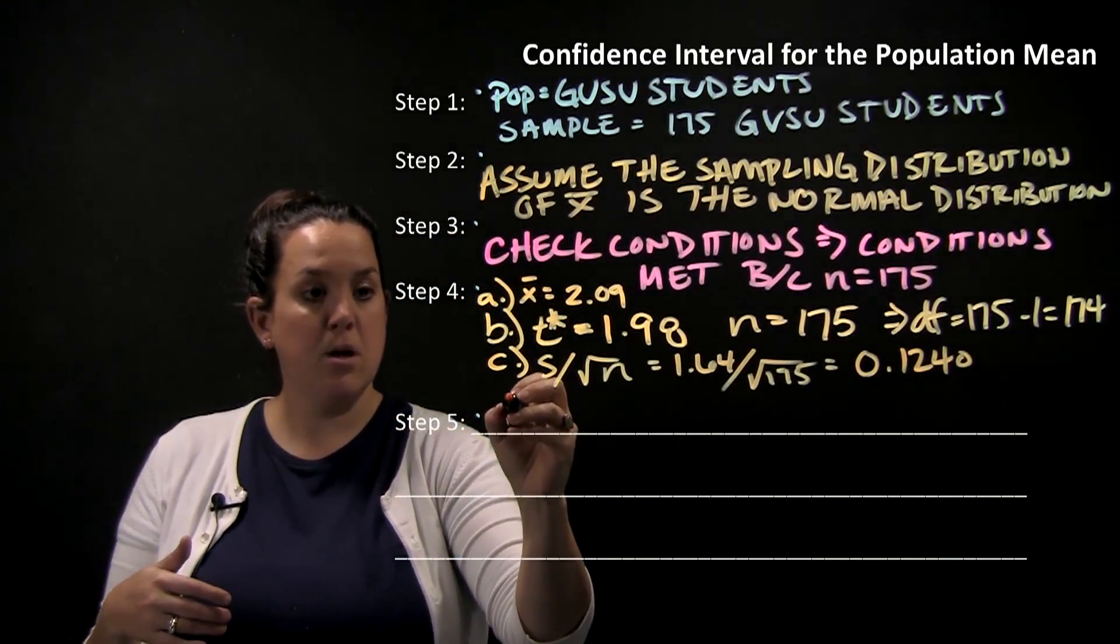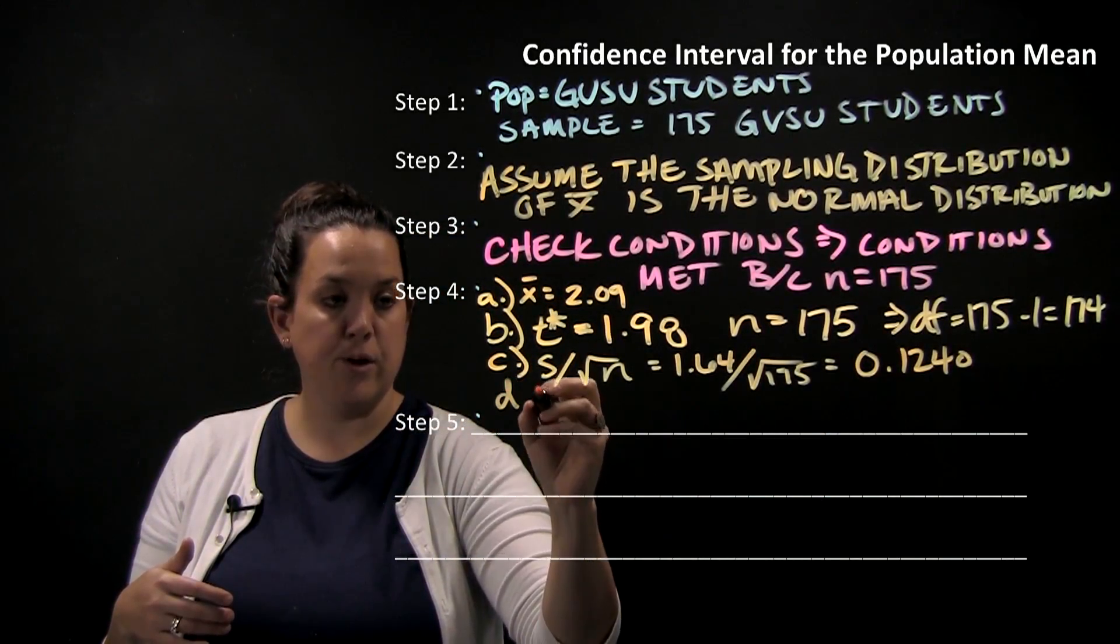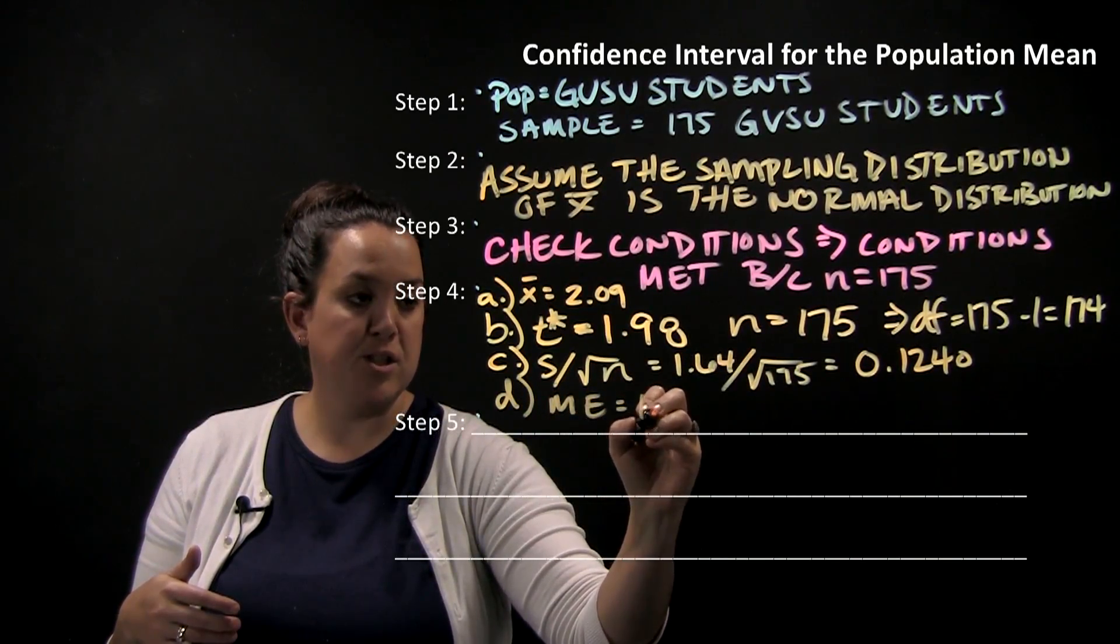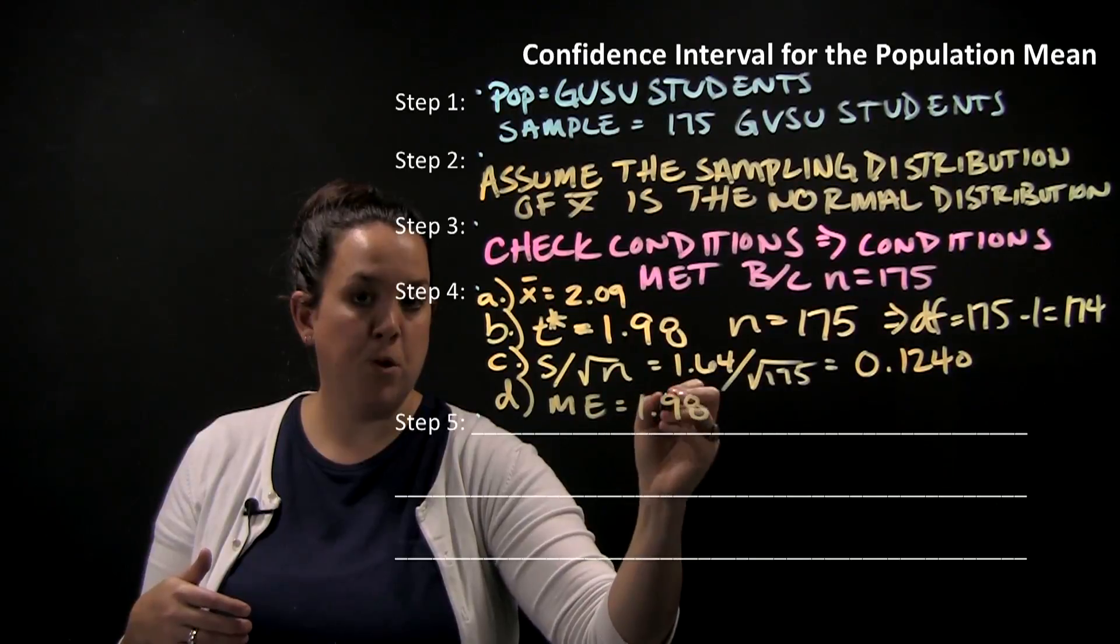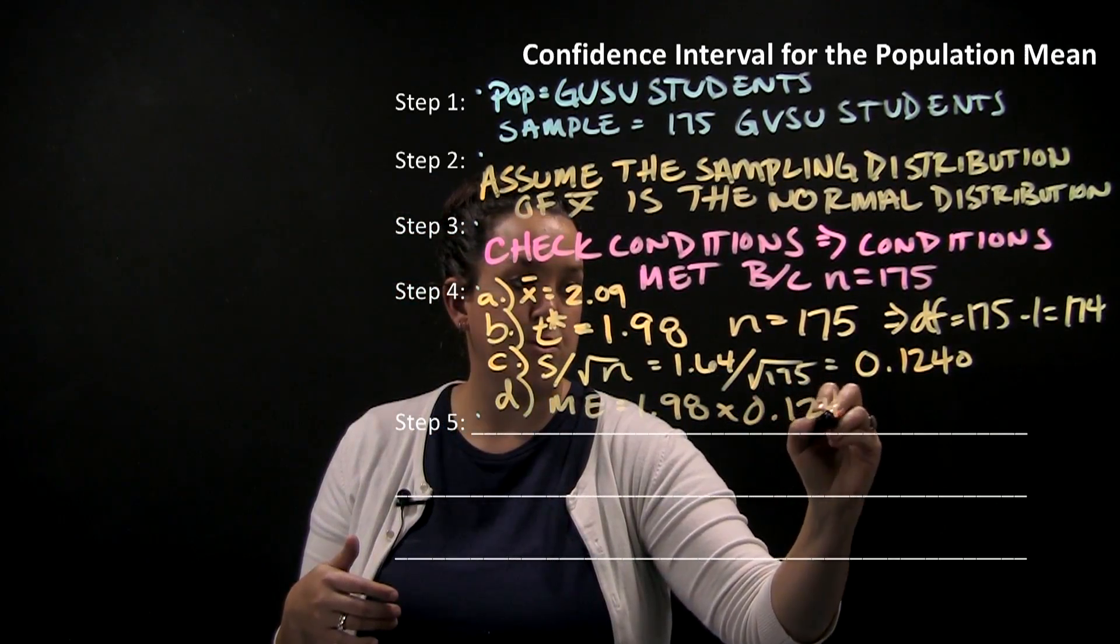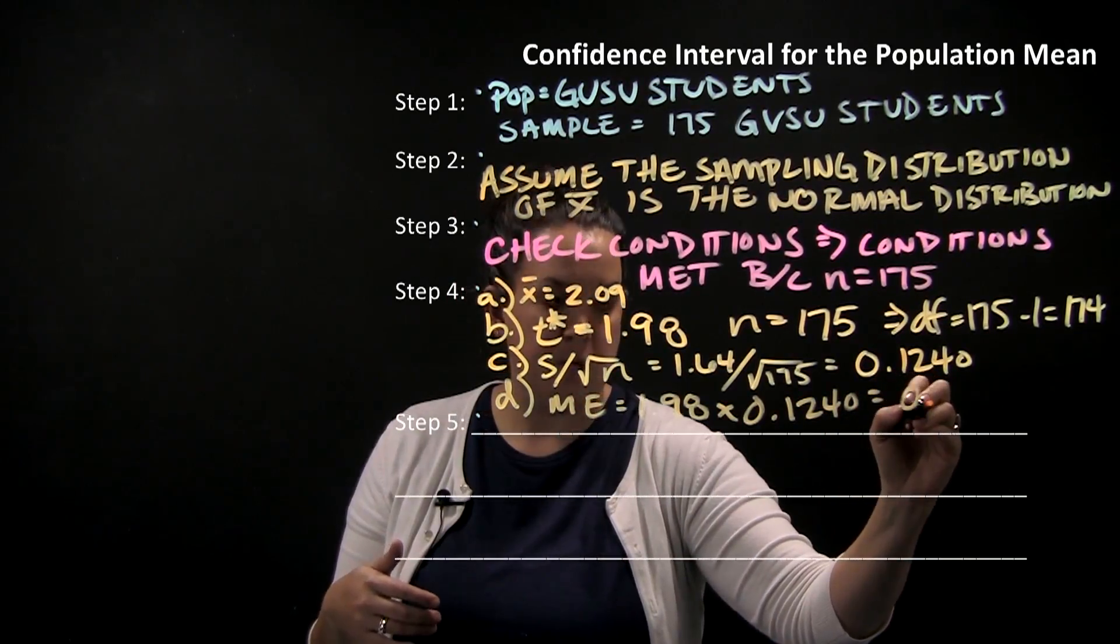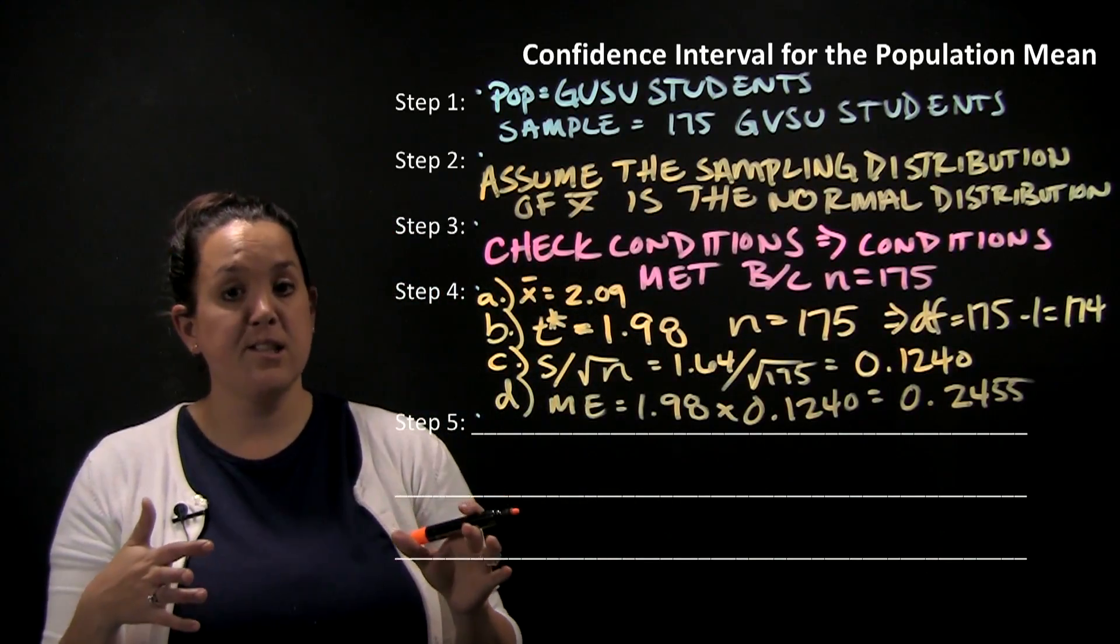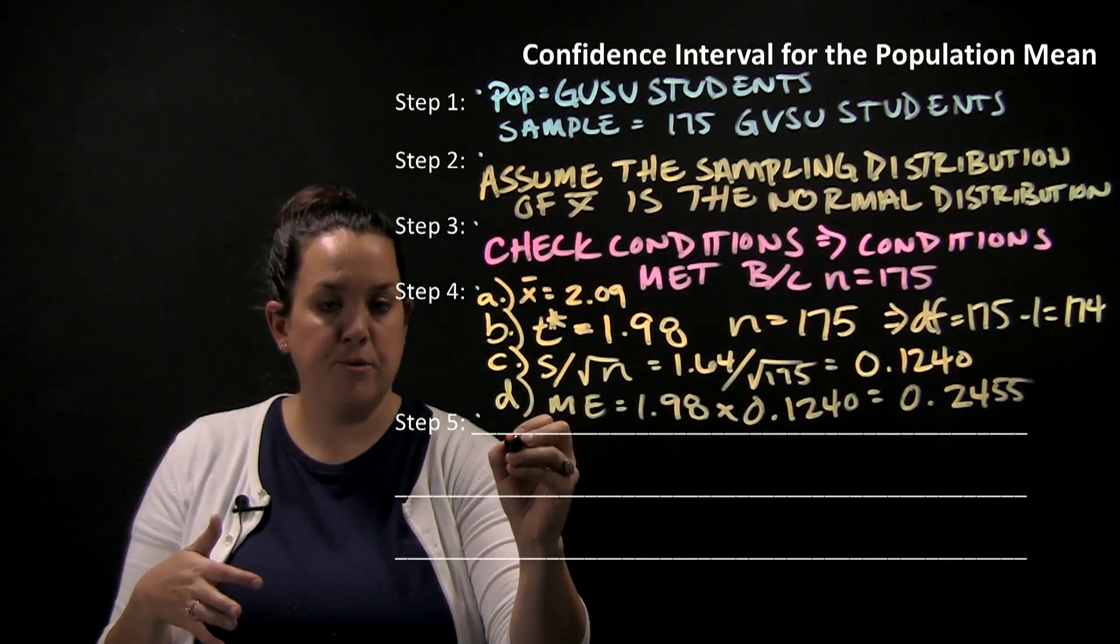Finally, before we calculate the interval itself, we have to calculate margin of error. Remember that just takes T star, so 1.98 times standard error, 0.124, and that comes out to be 0.2455. So now we have the information necessary to calculate the confidence interval.